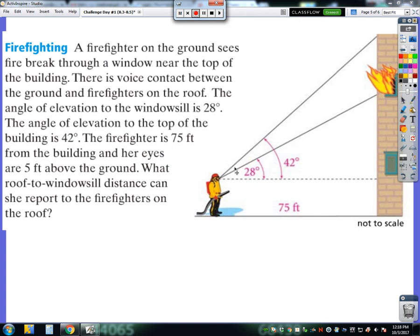Alright, we're going to take a look at the last two challenge problems from challenge day number one of chapter C. This one dealt with a firefighter on the ground who sees a fire break out in a window near the top of the building. There is voice contact between the ground and firefighters up on the roof. So I'm just going to draw some stick people. Here are our other firefighters that are up on the roof.